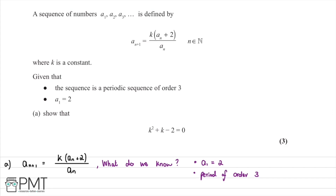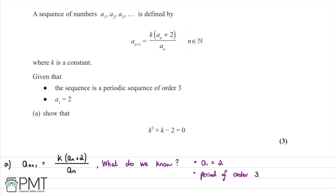In this question, we're told that a sequence of numbers denoted by a1, a2, a3, and so on, is defined by the formula: the n+1 term equals k multiplied by a_n plus 2, all divided by a_n, where n is a natural number and k is a constant. We're told the sequence is a periodic sequence of order 3, that a1 equals 2, and we're asked to show that k² + k − 2 = 0.